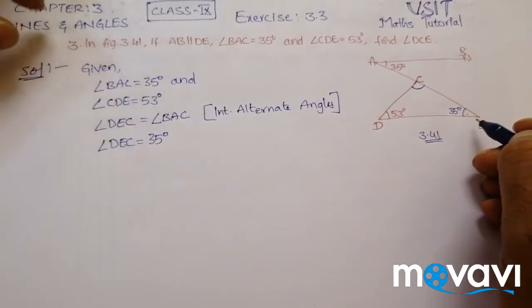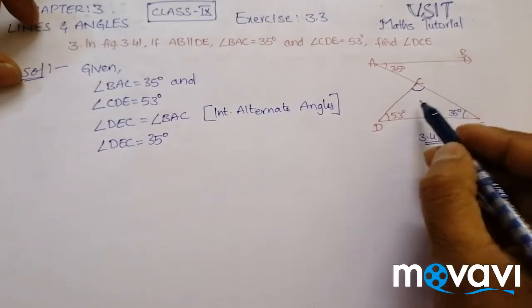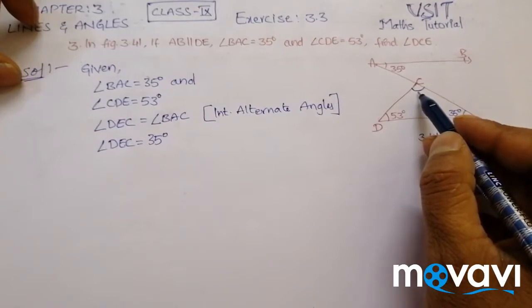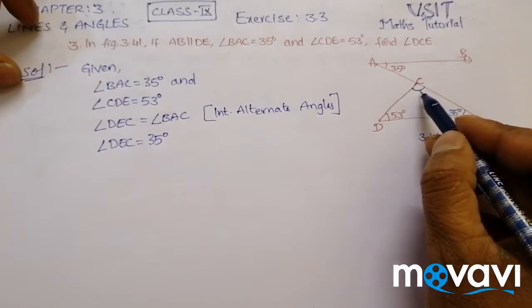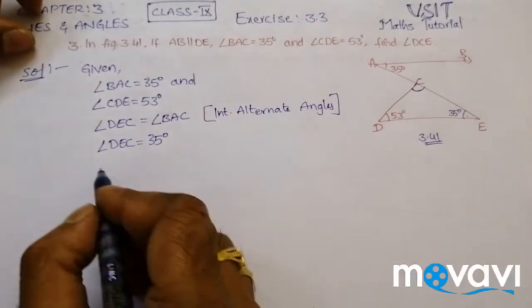Now what we have to do? Simple. We have to find this. In the sense here we have two angles, we have to find this angle. So we know that the sum of the interior angles of a triangle is equal to 180 degrees.